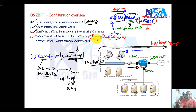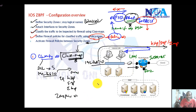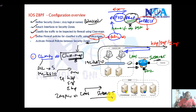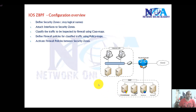Finally, we need to associate this policy map to the interfaces by specifying the direction. This is what we call creating a zone pair. In the zone pair we configure a source and destination security zone — for example, traffic coming from the LAN zone going to the Internet zone — and apply the policy. That covers the overall configuration steps for zone-based firewall, and we'll continue with the actual configurations in the next videos.